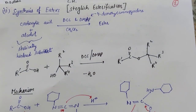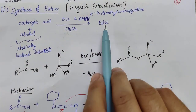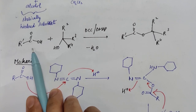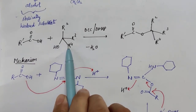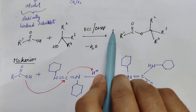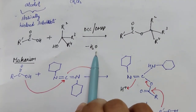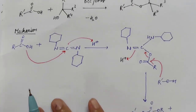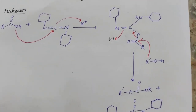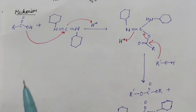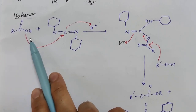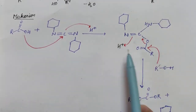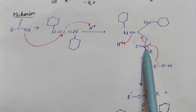DCC and DMAP in dichloromethane give ester formation. For example, a primary carboxylic acid with a tertiary alcohol in the presence of DCC and DMAP in dichloromethane releases one water molecule and produces the ester. The mechanism occurs in two steps: first the carboxylic moiety is activated, then the activated moiety is attacked by the alcohol group.